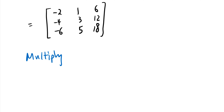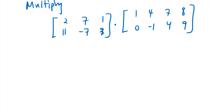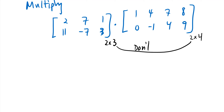Let's look at another example: multiply, if possible, a matrix with entries [2, 7, 1; -7, 11, -7; 3] by a matrix [1, 0, 4, -1; 7, 4; 8, 9]. Before multiplying, check the dimensions first. The first matrix is 2×3 and the second is 2×4 — wait, these inner dimensions don't match, so we cannot multiply these matrices.